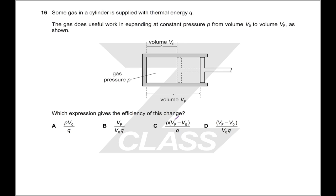Some gas in a cylinder is supplied with thermal energy Q. The gas does useful work in expanding at constant pressure P from volume V0 to volume VF as shown. Which expression gives the efficiency of this change? So efficiency is going to be your useful work over the total energy in. We have put in Q, so we want to have Q on the bottom. We have got out useful work P delta V. Work is P delta V. Delta V is VF minus V naught. So P VF minus V naught is our useful work. Q is what we put in. There we go.